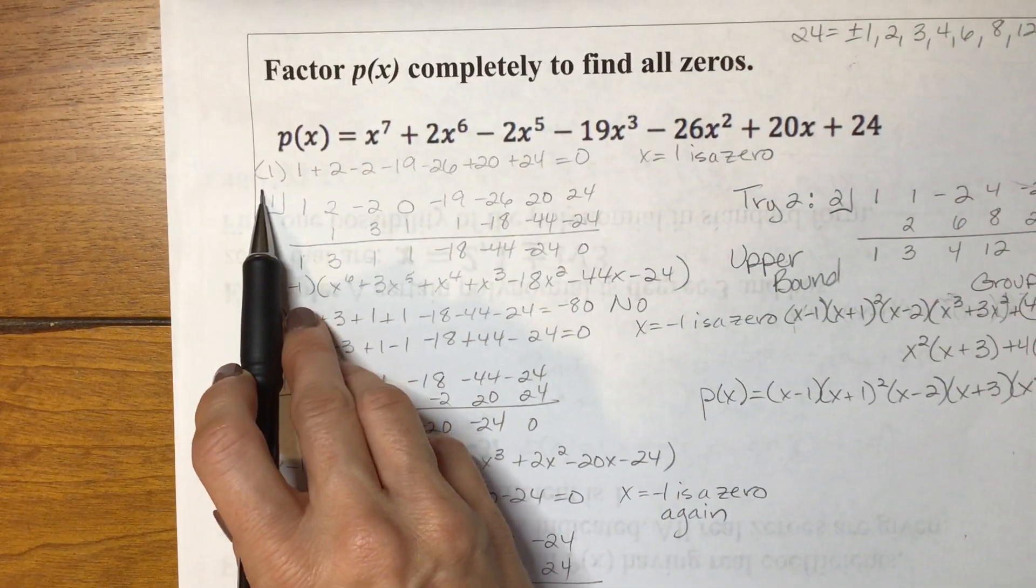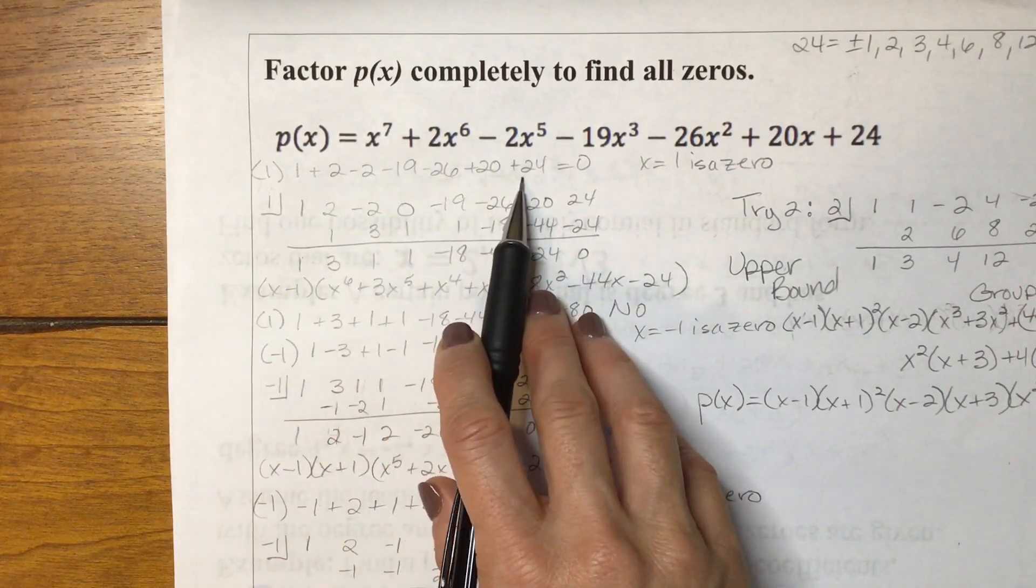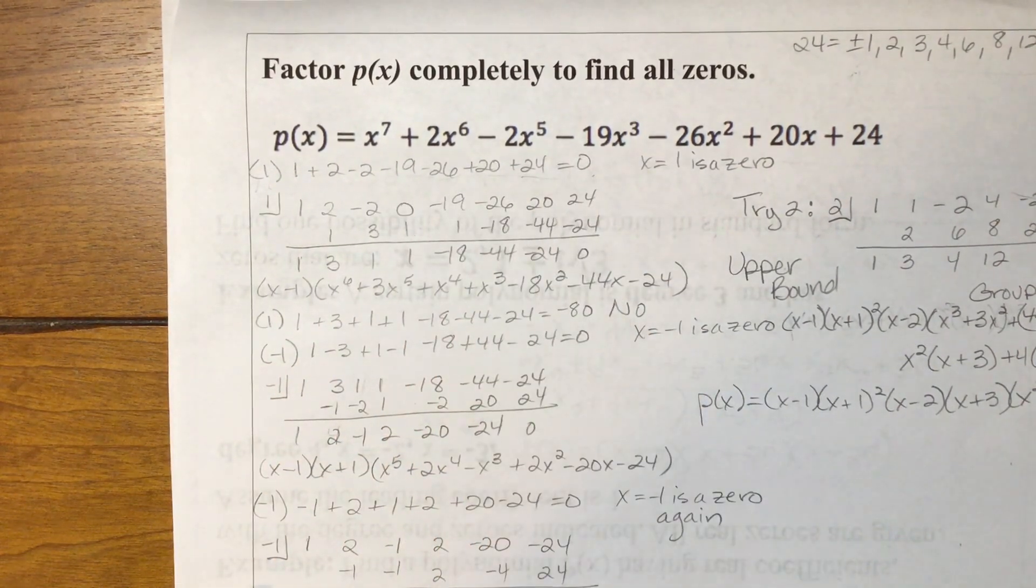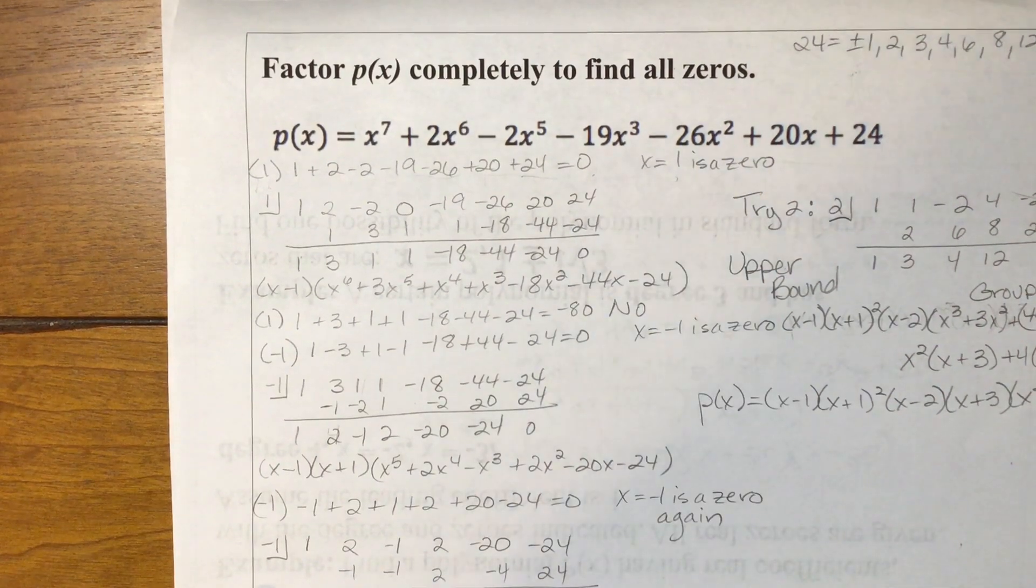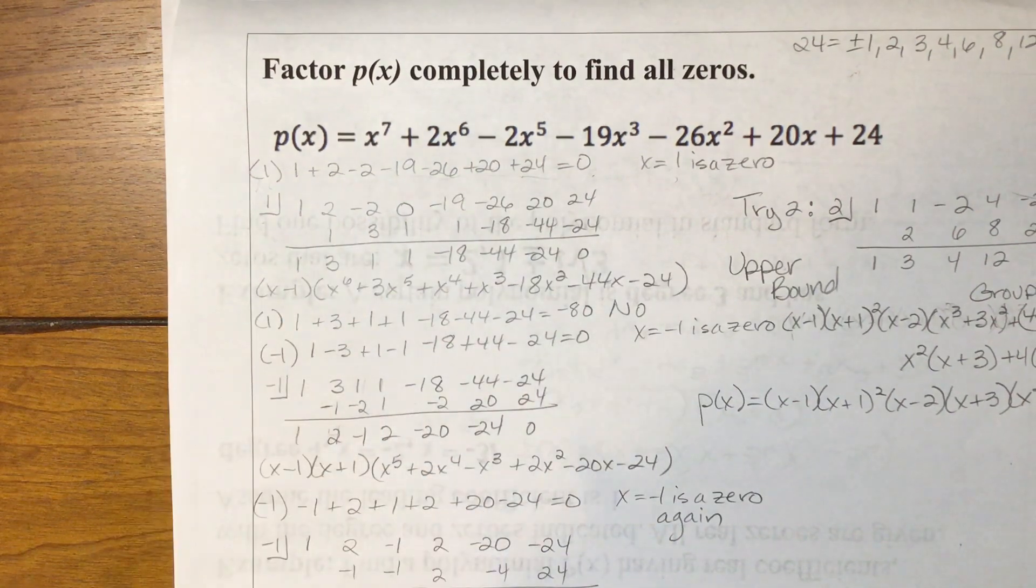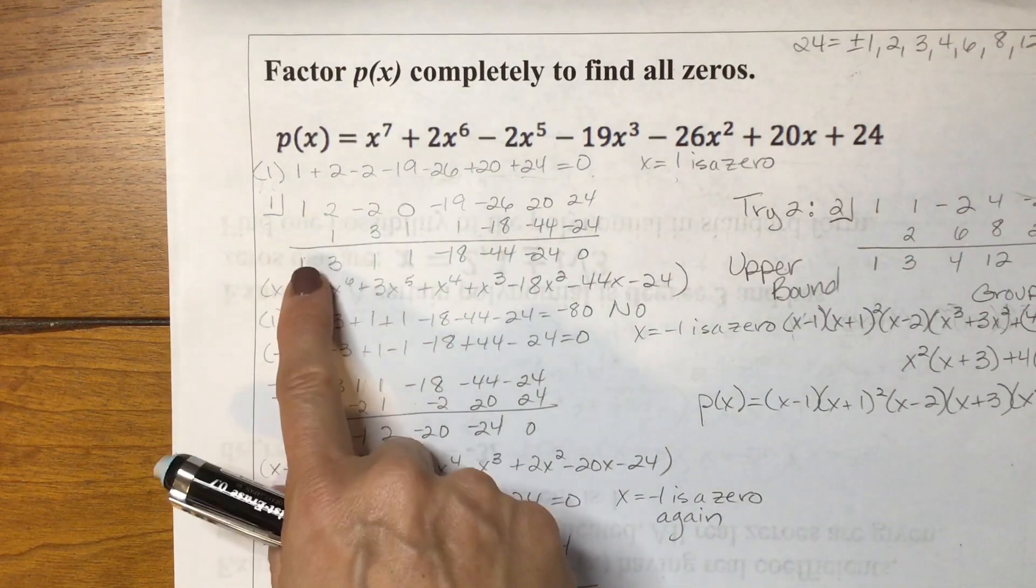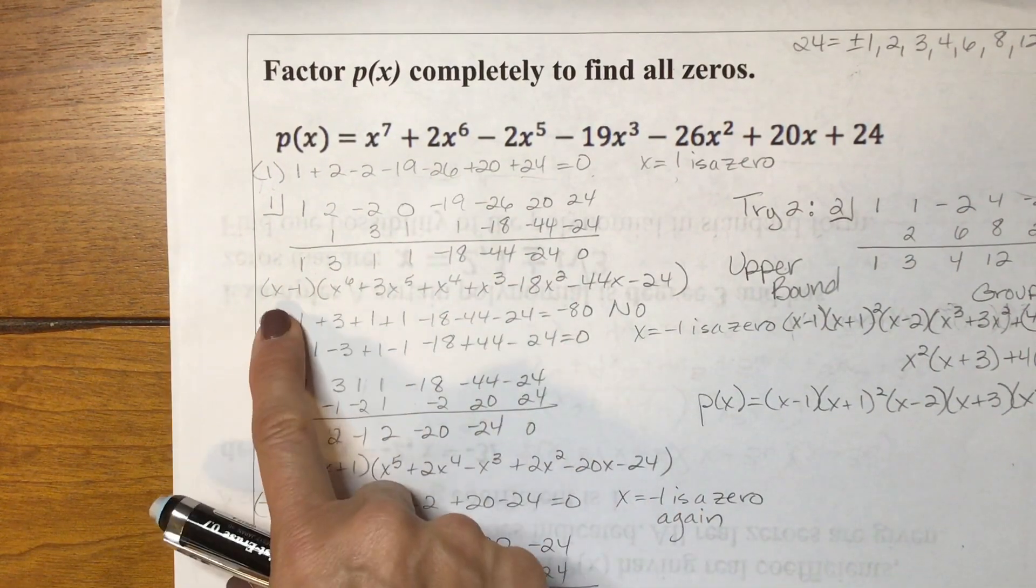So here I tested positive 1, and I can see when I added up all the coefficients from p of x, it equals 0. So I knew that x equals 1 was a zero. And then I started with my synthetic division here. You guys can pause anytime and write this all down or check your work.